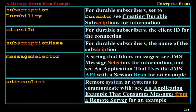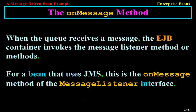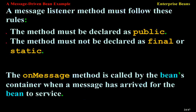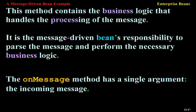When the queue receives a message, the EJB container invokes the message listener method. For a bean that uses JMS, this is the onMessage method of the MessageListener interface. A message listener method must follow these rules: the method must be declared as public; the method must not be declared as final or static. The onMessage method is called by the bean's container when a message has arrived. This method contains the business logic that handles the processing of the message — it is the message-driven bean's responsibility to parse the message and perform the necessary business logic.